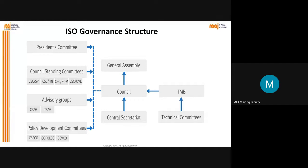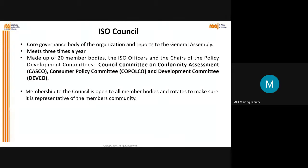To understand the ISO governance structure: you have the council, which is a large body to which the TMB (Technical Management Board) and central secretariat report. Under the council there is a general assembly. On the left-hand side you can see the president's committee, council standing committees, advisory groups, and policy development committees - all of which report to the council. The council is the big governance body which helps to design and develop ISO standards. ISO council is the core governance body of the organization and reports to the general assembly.